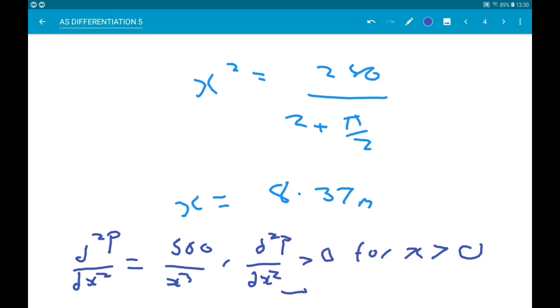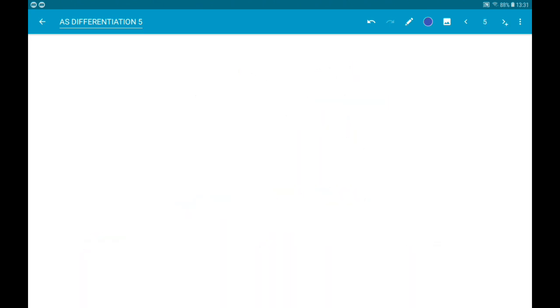So all we need to do now is sub our x value into P. So P should give you 59.8 meters.